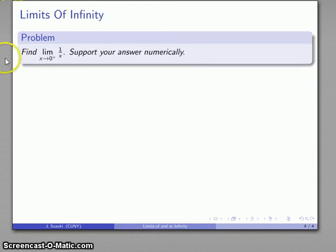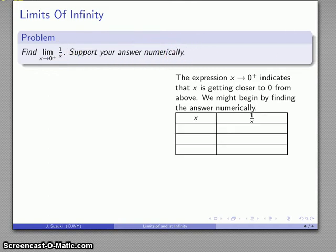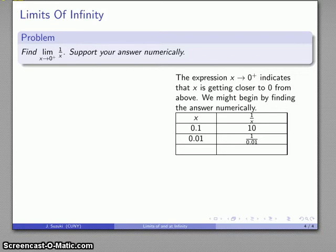Now let's consider a different type of limit: the limit of 1/x as x gets close to zero, but always staying a little bit above zero. We again want to support our answer numerically. Starting our table: when x = 0.1, one over x is 10; when x = 0.01, one over x is 100; when x = 0.001, one over x is 1000.